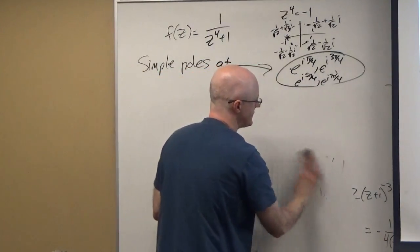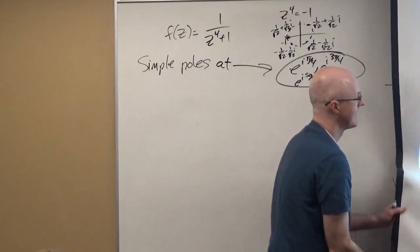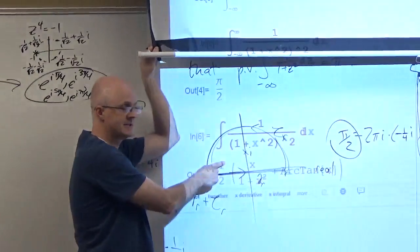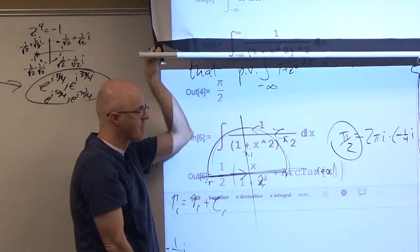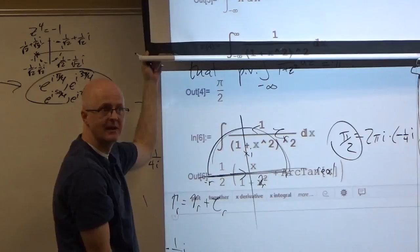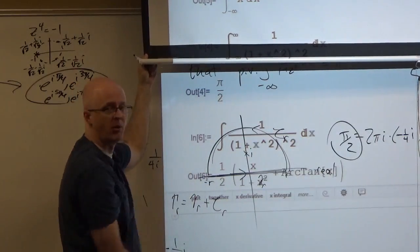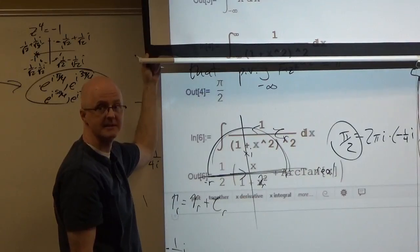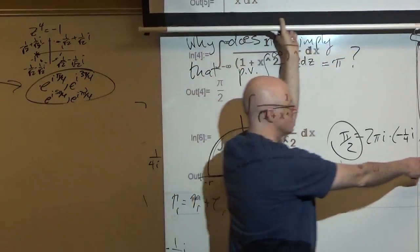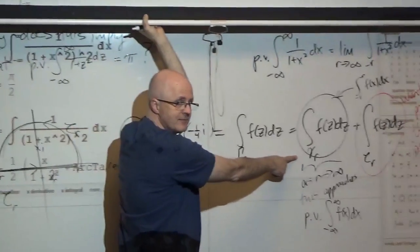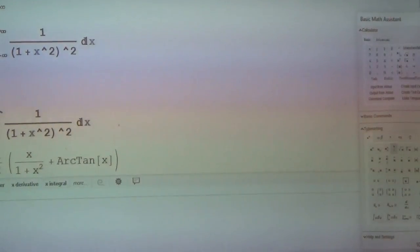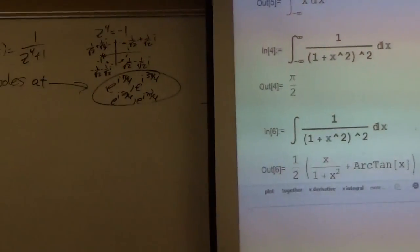Integrating over a semicircular contour, when r is sufficiently large (bigger than 1), two poles will be inside the contour — the ones with positive imaginary part. We need to calculate the sum of two residues before multiplying by 2πi. Let's calculate one by hand and have Mathematica do the other.